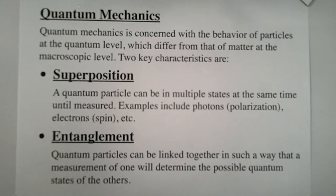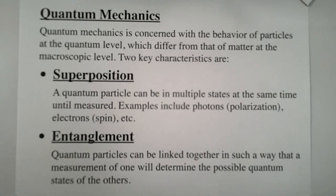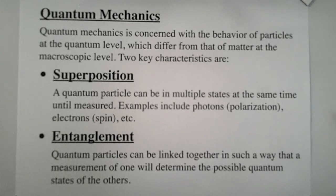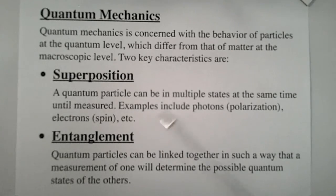Let's talk more about quantum mechanics. Quantum mechanics is concerned with the behavior of particles at the quantum level, which differs from that of matter at the macroscopic level. Two key characteristics are superposition and entanglement. In superposition, a quantum particle can be in multiple states at the same time until measured. Examples include photons in their polarization, electrons in their spin, etc. In entanglement, quantum particles can be linked together in such a way that a measurement of one will determine the possible quantum states of the others. Superposition is an unusual concept that we don't see in the macroscopic world — it only applies at the quantum level.